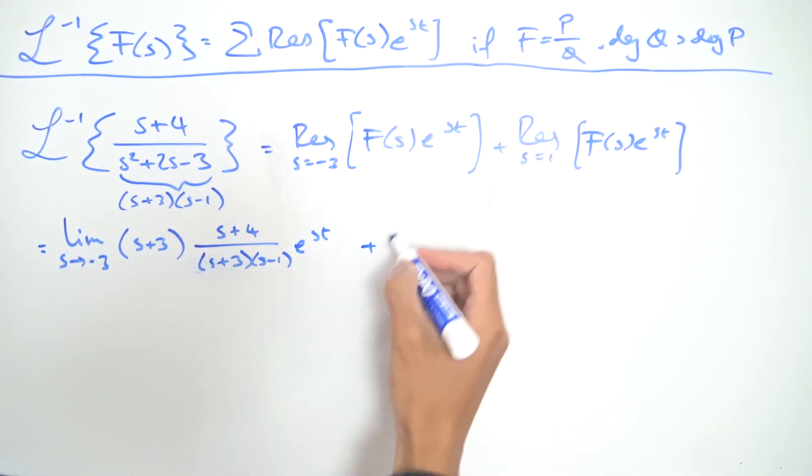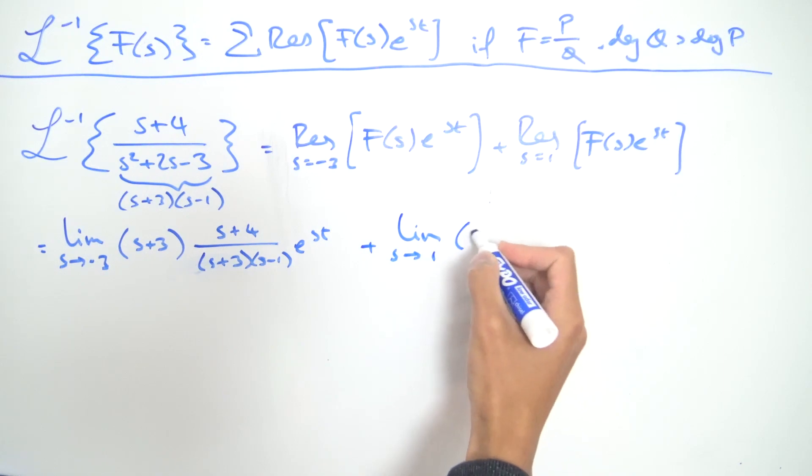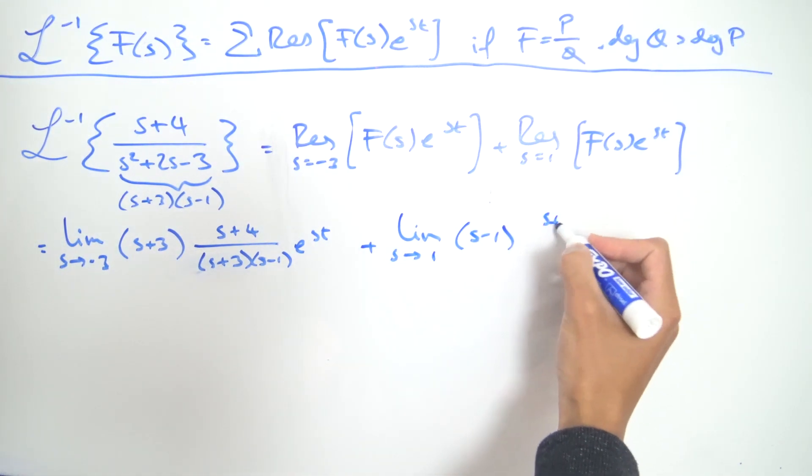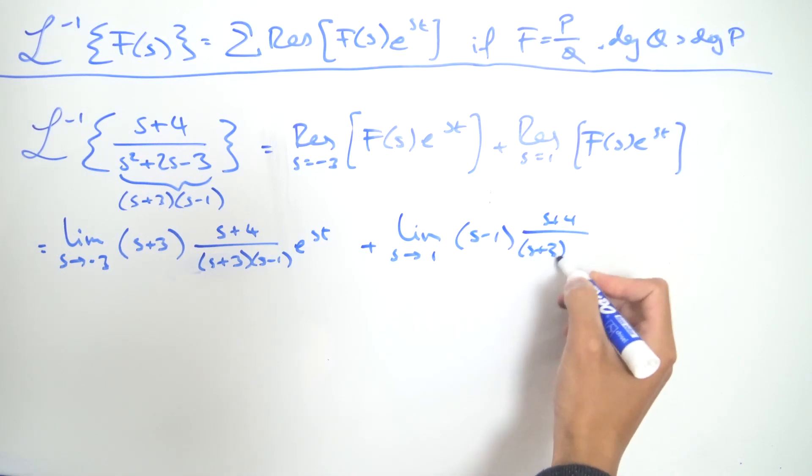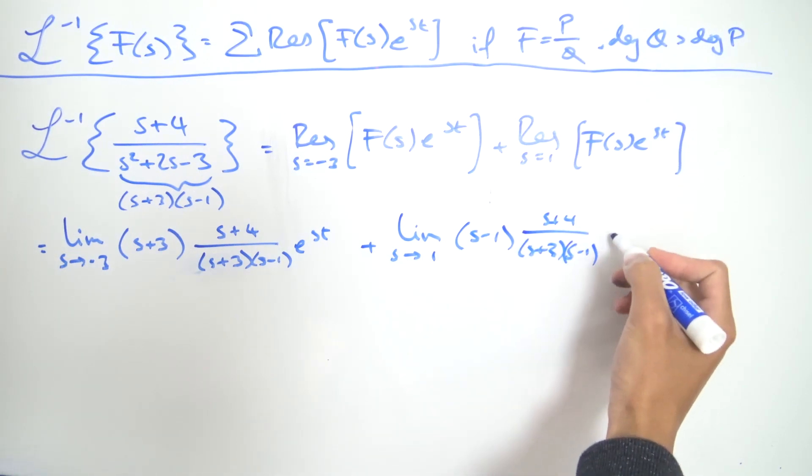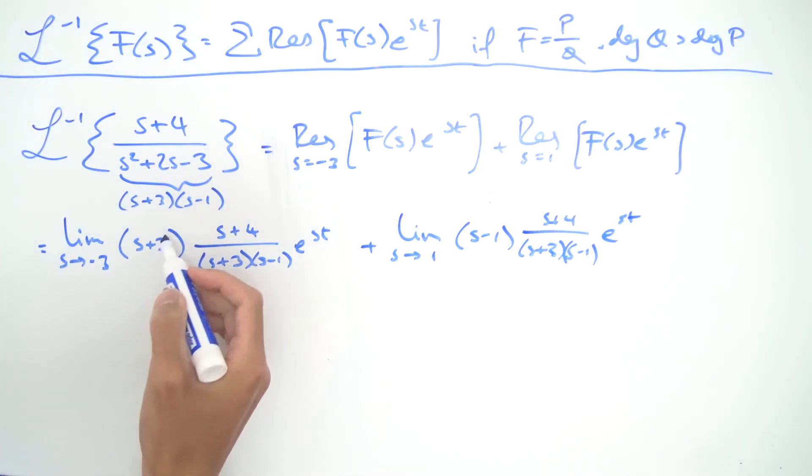And then we're going to add the second limit as s approaches one of (s-1) times our function which is (s+4) divided by (s+3)(s-1) and don't forget your e^(st). And notice some cancellations can happen: this s plus three and s plus three, this s minus one and s minus one.